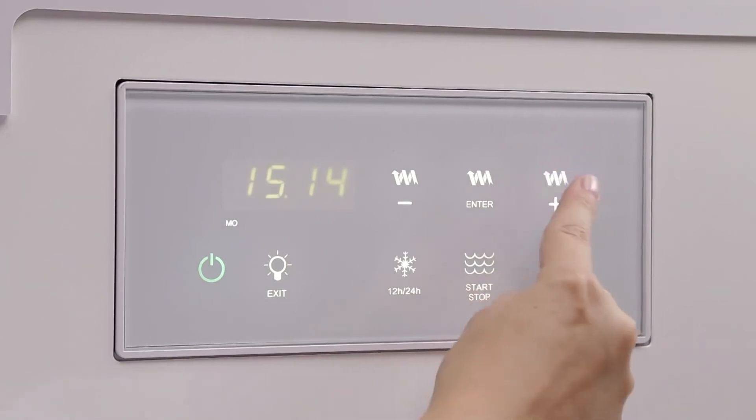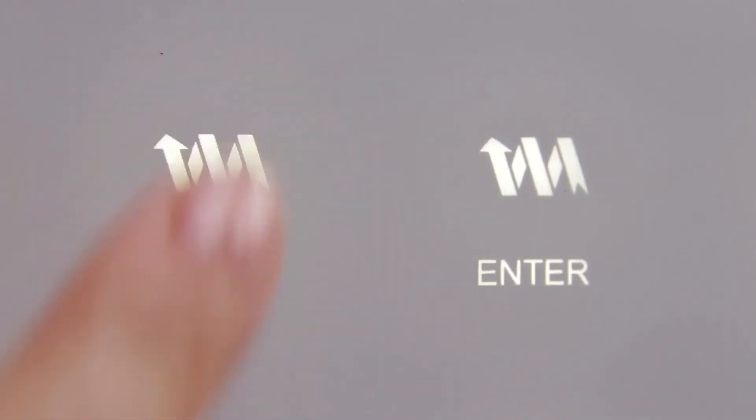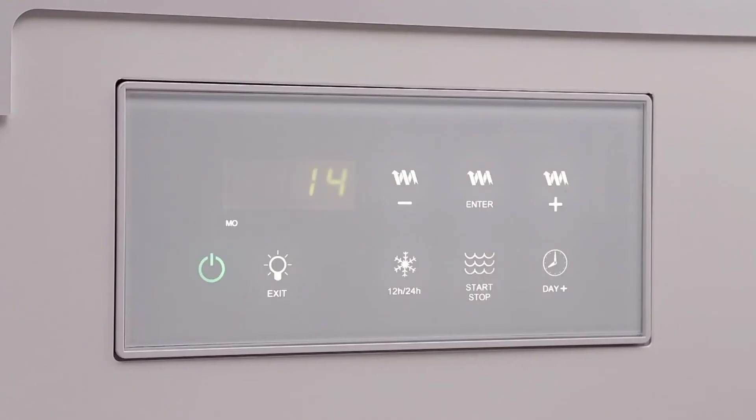Time set. While the hours blink on the display, use the plus and minus buttons to modify it. Once set, press the enter button to confirm. Repeat the same action to set minutes.